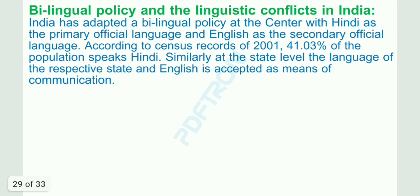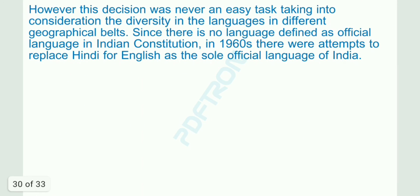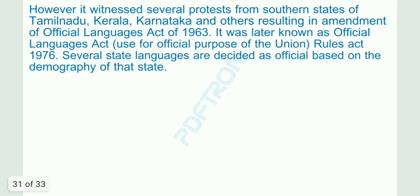India has adopted a bilingual policy at the center with Hindi as the primary official language and English as the secondary official language. According to the census of 2001, 41.03% of the population speaks Hindi. At the state level, the language of the respective state and English are accepted as means of communication. In the 1960s there were attempts to replace English with Hindi as the sole official language, but this witnessed several protests from southern states of Tamil Nadu, Kerala and Karnataka, resulting in the amendment of the Official Languages Act of 1963, later known as the Official Languages (Use for Official Purposes of the Union) Rules Act 1976. Several state languages are designated as official based on the demography of each state.